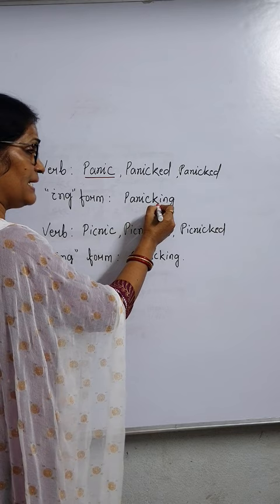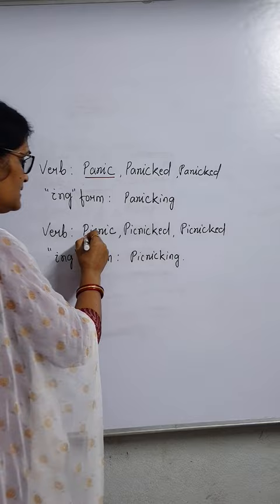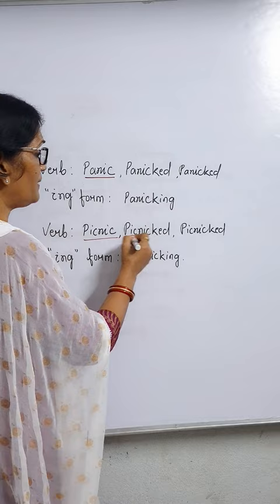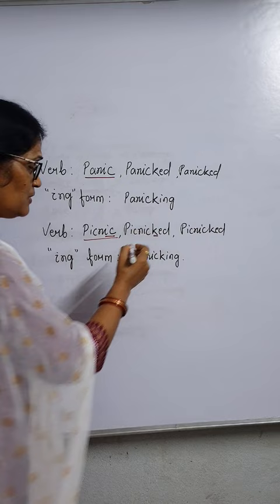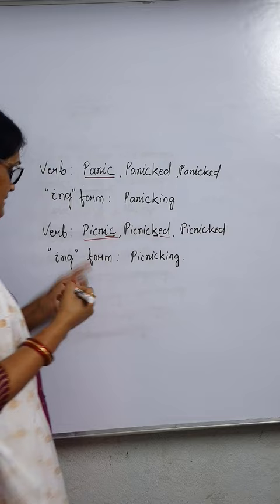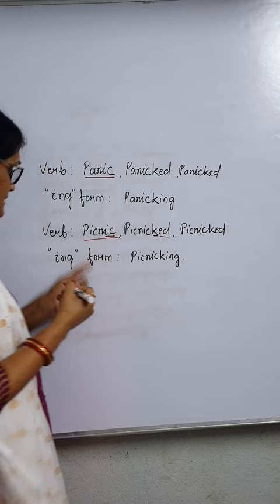'Picnic' is a noun. When you use it as a verb, its past form is 'picnicked' — see, K is added here. The last letters are I plus C. When you change the word into past and past participle, K is added, then ED: picnicked. Its -ing form is 'picnicking' — C, K — K is added with -ing.